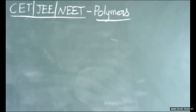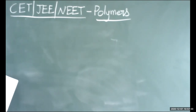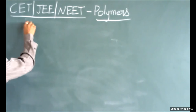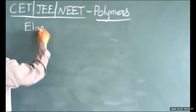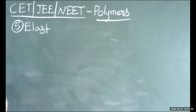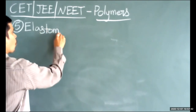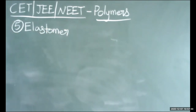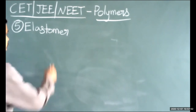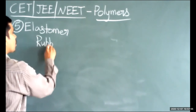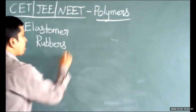Question number 5: which of the following is an elastomer? Elastomers have elastic nature. Rubbers are the substances that have elastic nature.